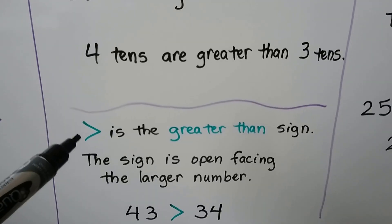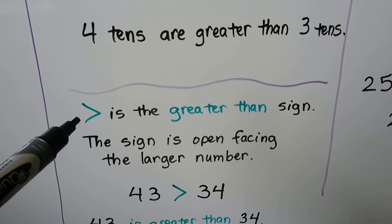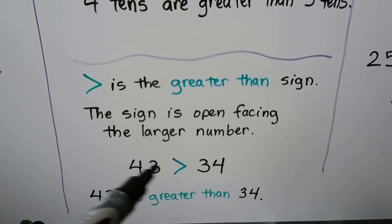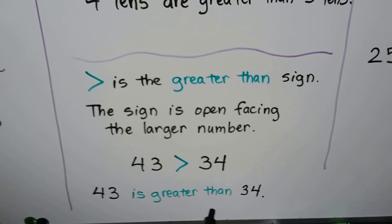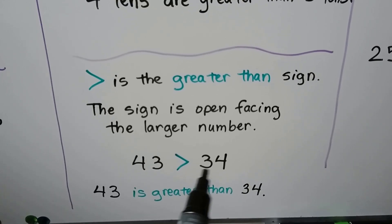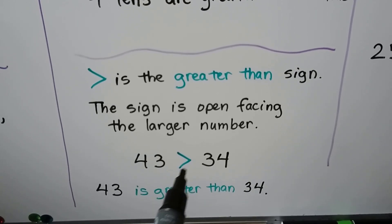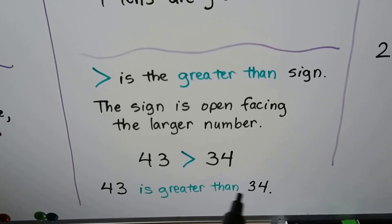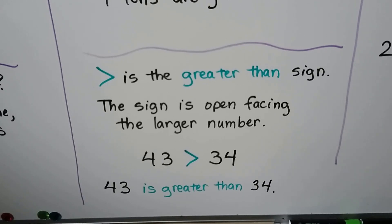This is the symbol for 'is greater than' — it's the greater than sign. The sign is open facing the larger number. 43 is greater than 34. It's easier to write this symbol than to write all these words and letters. We can just use it to mean 'is greater than.'